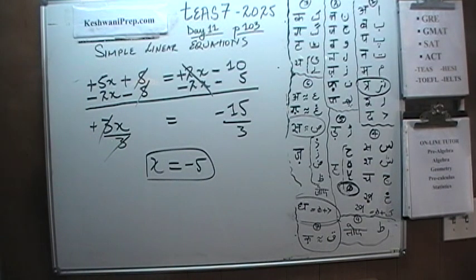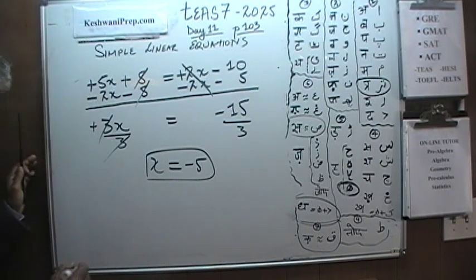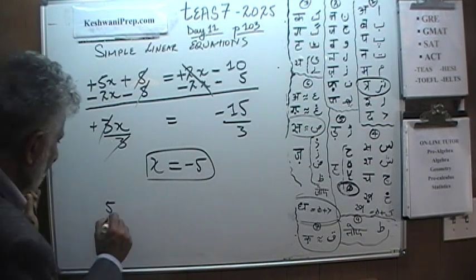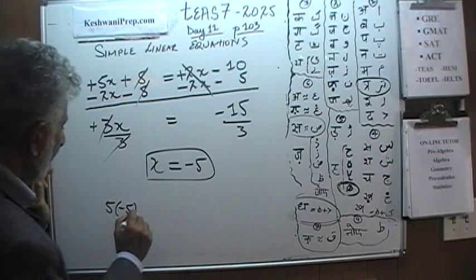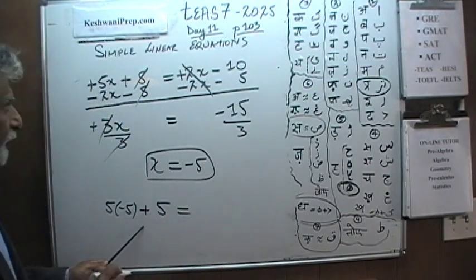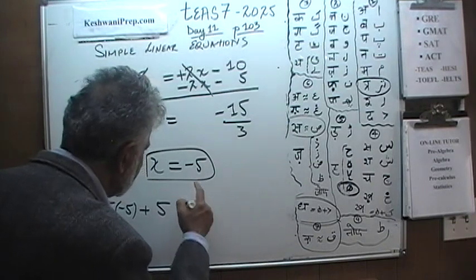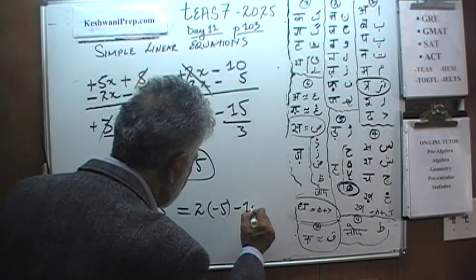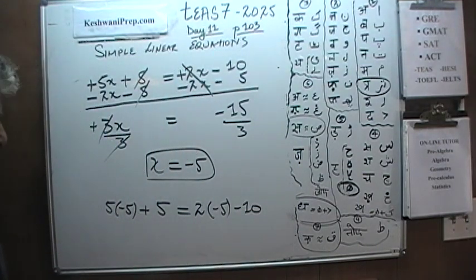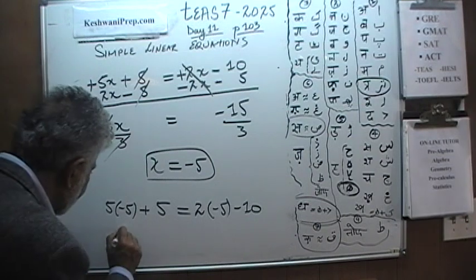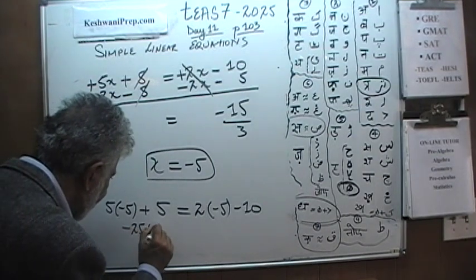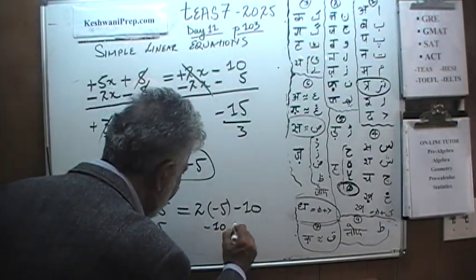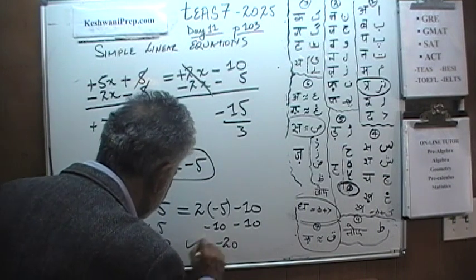Again, if you wanted to, we could verify it very easily. That was the original equation. We are claiming that x is negative 5. So 5x plus 5. We were told that this quantity has to equal 2x minus 10. If it checks out, then we are okay. 5 times negative 5 is negative 25 plus 5, that's going to give us negative 20. Here we have 2 times negative 5, which is negative 10, and this is negative 10. That gives us negative 20. It checks out.